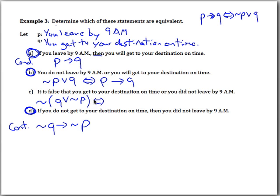For statement C, 'it is false that,' means we apply the negation to everything inside: negation Q, we flip the 'or' to an 'and,' and negation of negation P is just P, giving us negation Q and P. We don't have any rules for changing an 'and' statement into a type of conditional, so statement C is not equivalent. But statements A, B, and D are all equivalent.